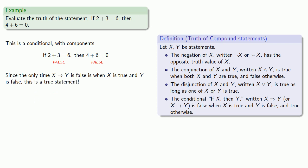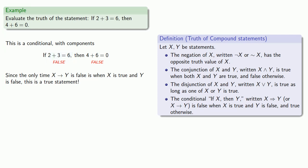It's important to understand: it's not that '4 plus 6 equals 0' is true — that's false. And it's not that '2 plus 3 equals 6' — that's also false. It is the case that the conditional 'if 2 plus 3 equals 6, then 4 plus 6 equals 0' is true.